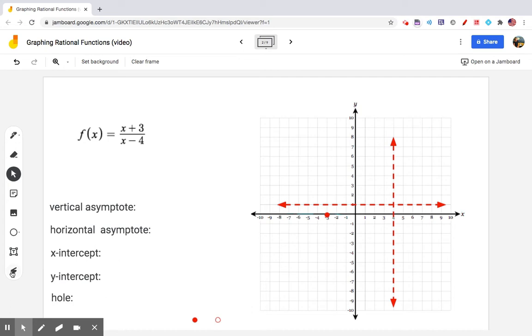To find my y-intercept, I set x equal to 0. When I substitute 0, my fraction simplifies to negative 3 fourths. This last open circle is a hole. A hole results in a rational function if you divide some factor in the numerator by the same factor in the denominator. But we didn't simplify anything, so we're not going to worry about a hole.